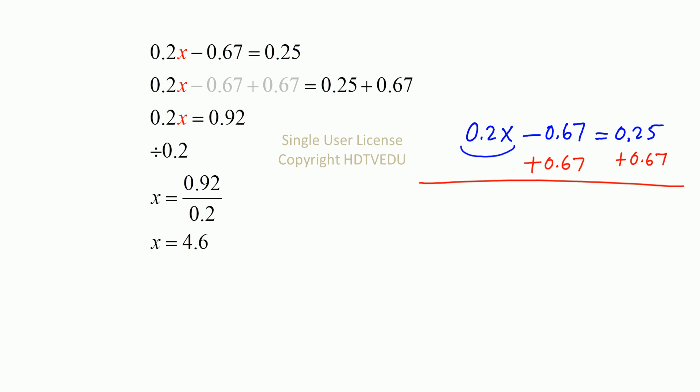So, what do we get? 0.2x is equal to 0.92.